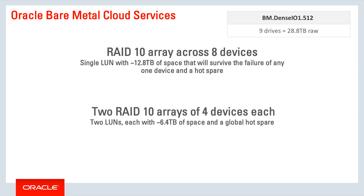A very high-speed option is a RAID 10 array across eight devices. A RAID 10 array always has to have an even number of devices, so we use the last ninth device as a hot spare. Another high-performance option is two RAID 10 arrays of four devices each — two LUNs with isolated I/O, each with 6.4 terabytes of space and a global hot spare.